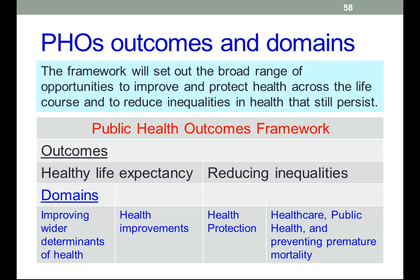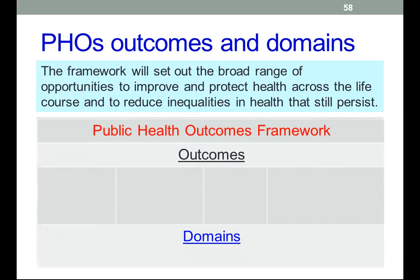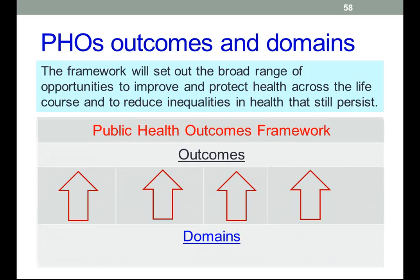There are domains there — health improvement, health protection — which, if they are acted on, will improve health, healthy life expectancy, and reduce inequalities. So the domains feed to the outcomes, which ultimately achieves the objectives, we hope, of the public health outcomes framework.